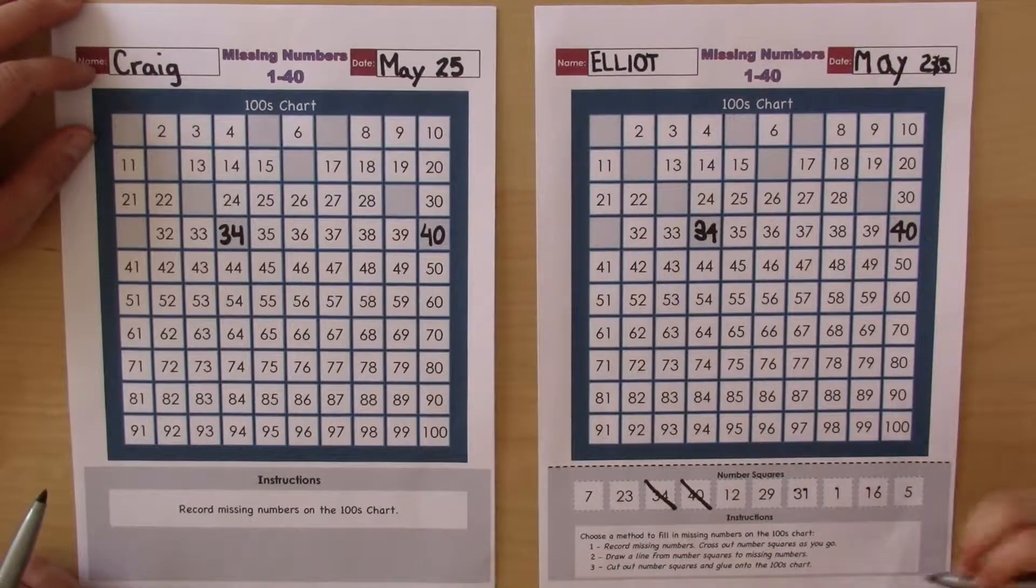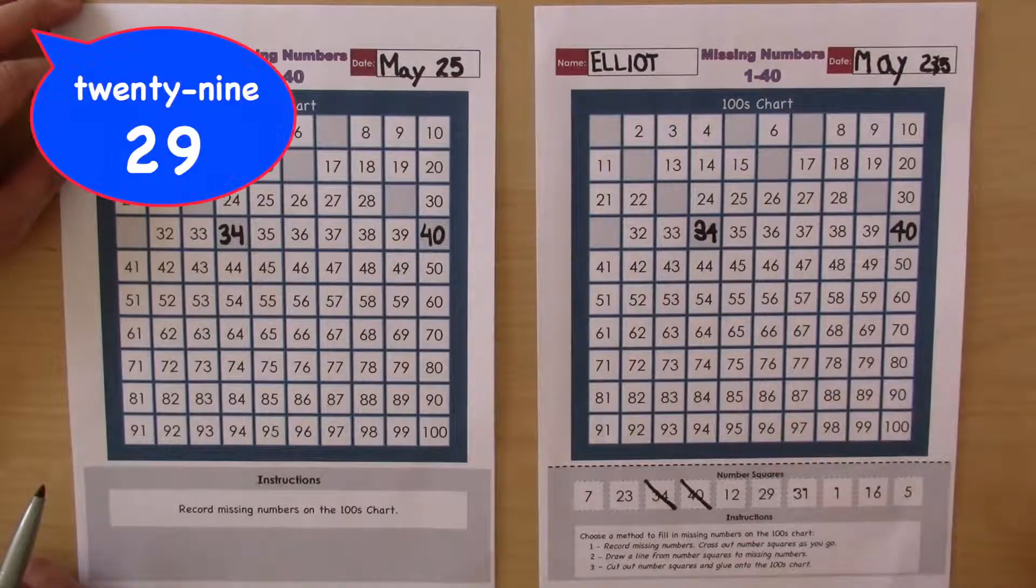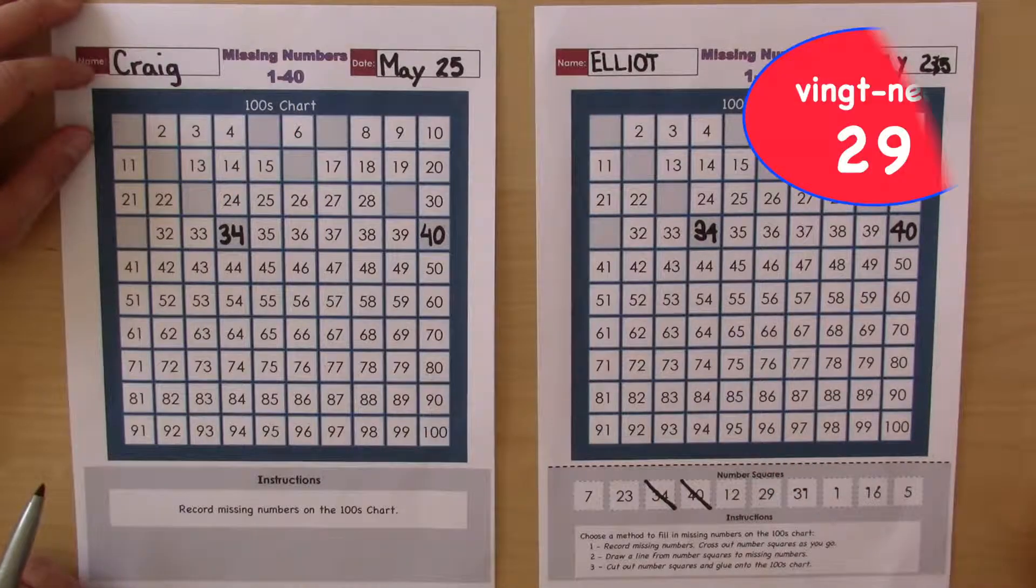Which one's next? This one. What's that called? Twenty-nine. And how do we say twenty-nine in French? Trente.